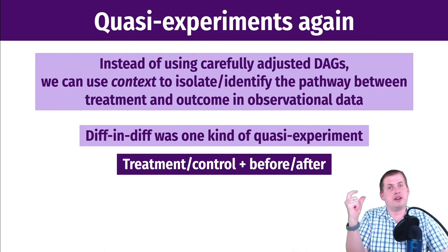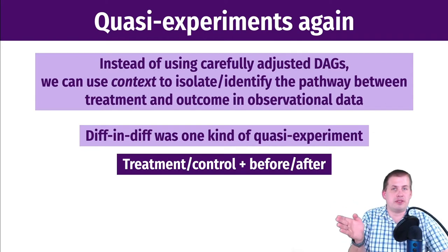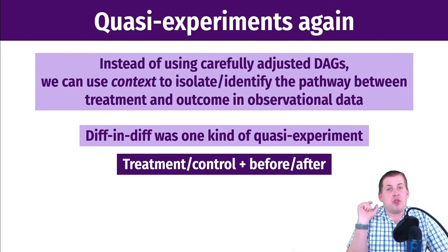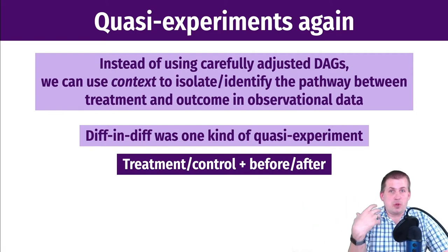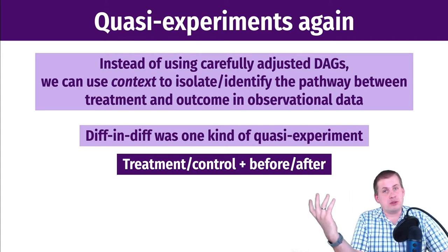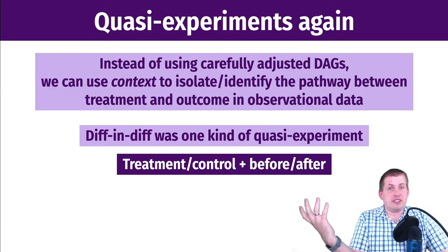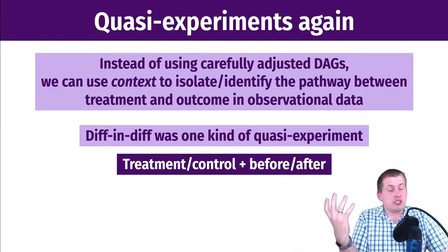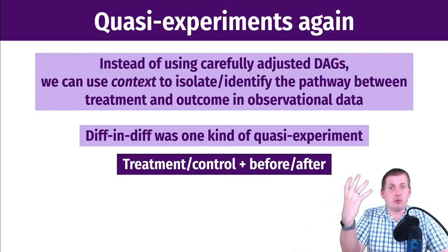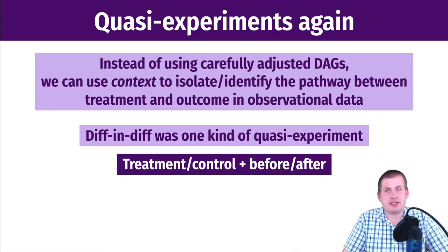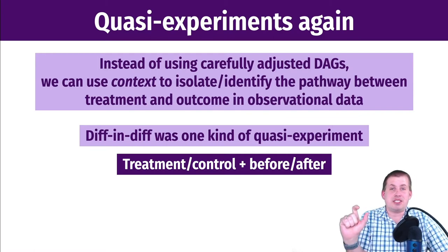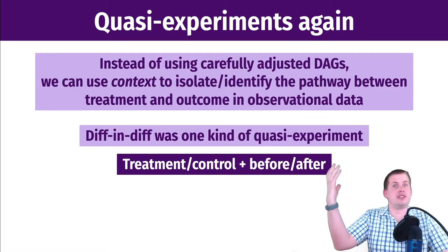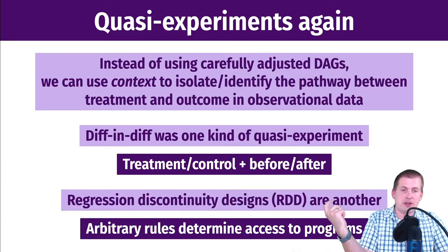With the New Jersey and Pennsylvania example, New Jersey raised their minimum wage and Pennsylvania didn't, so researchers could compare the treatment and control groups across states before and after the policy change. That only works because of the specific context of that situation. You can draw a DAG for diff-in-diff, and you should — using DAGs to guide what you control for, not just throwing in random control variables. But you're isolating the relationship through context, not through adjustment.